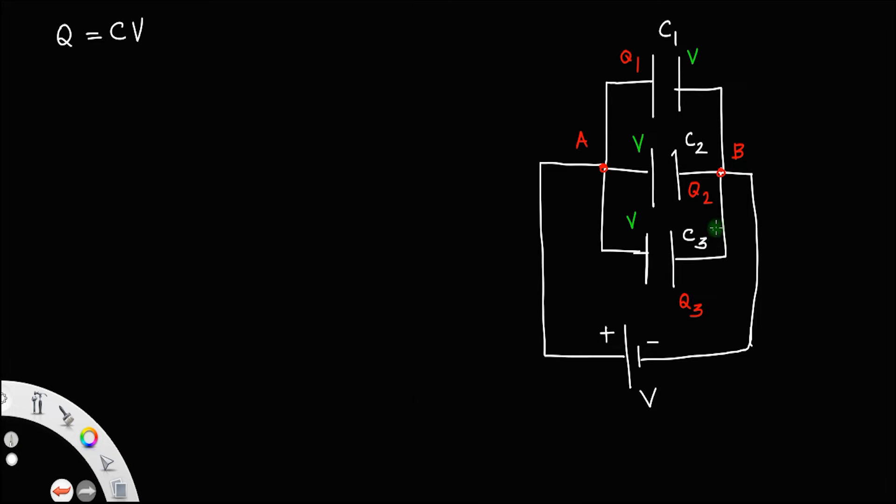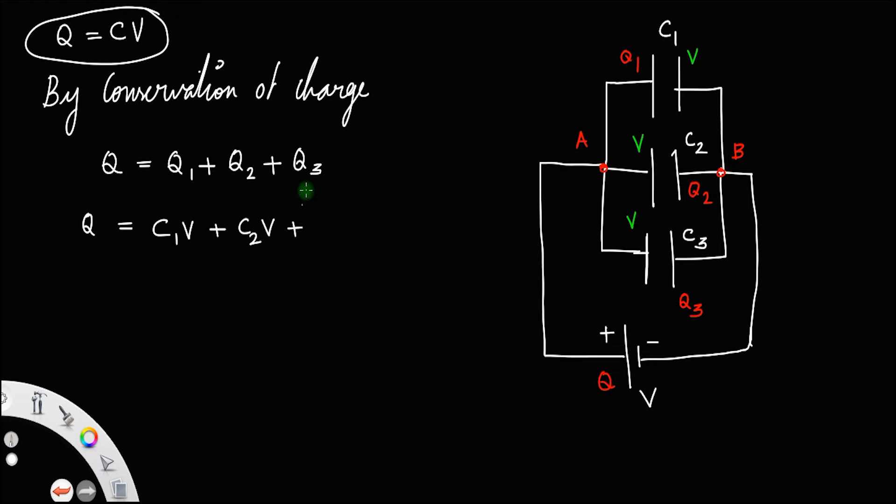Now, all these charges are supplied by the charge due to the cell. So, by conservation of charge, we know charges can neither be created nor be destroyed. So, charge supplied by the cell equal to charges across the individual capacitors. Q is equal to, the potential remains the same. So, we have from this relation Q1 equal to C1V, Q2 equal to C2V and Q3 will be C3V and you can write this as Q equal to V times C1 plus C2 plus C3. Let us call this as equation number 1.